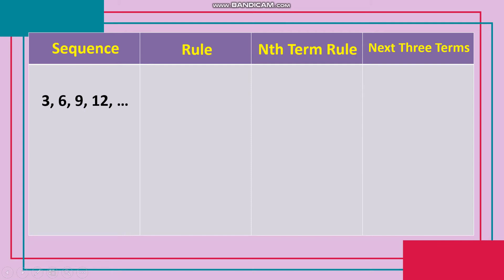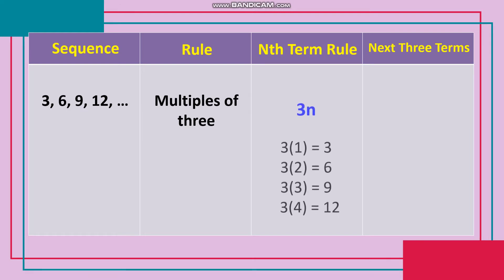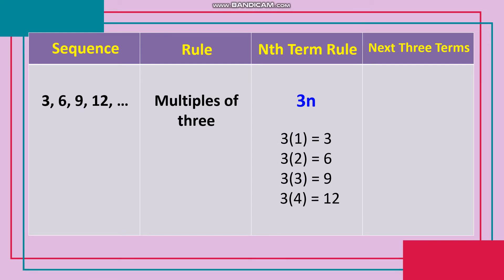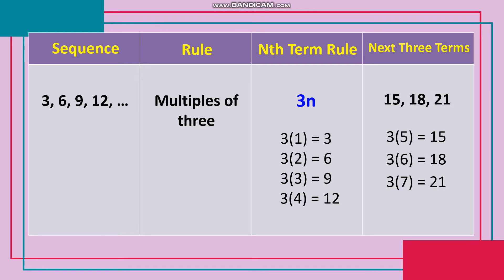Sequence: 3, 6, 9, 12, and so on. Rule: multiples of 3 or skip counting by 3's. Nth term rule: 3n or 3 times n. Let n be the 1st term: 3×1=3; 2nd term: 3×2=6; 3rd term: 3×3=9; 4th term: 3×4=12. Para makuha ang next three terms: 5th term: 3×5=15; 6th term: 3×6=18; 7th term: 3×7=21. Therefore, the next three terms are 15, 18, and 21.